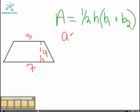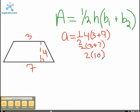For example, here our height is 4 and our bases are 3 and 7. You just substitute these into the formula and then solve it out. So here we have 1/2 times 4 times 3 plus 7, which then, in the end, will equal 20.